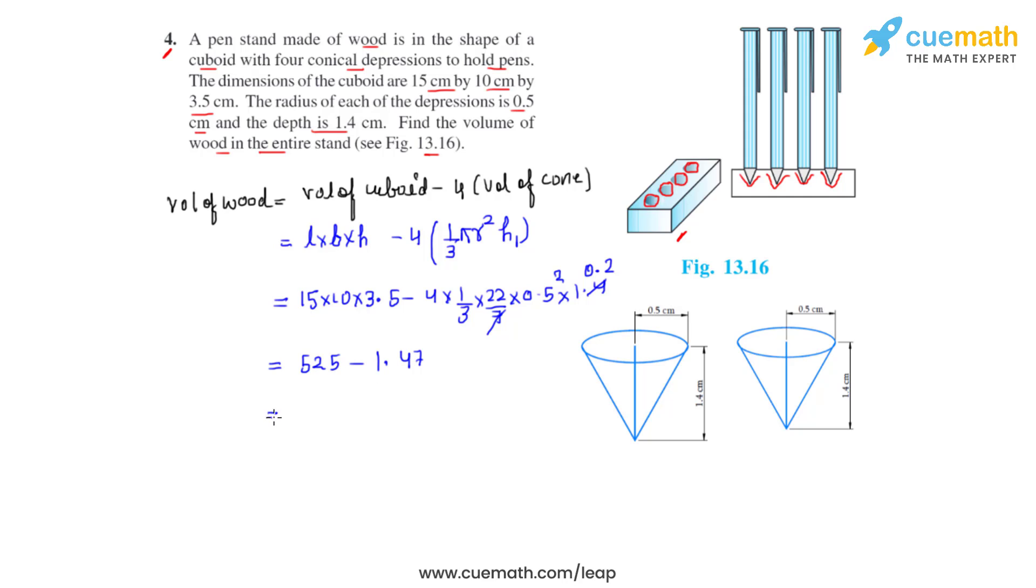Doing the subtraction gives us the difference as 523.53 centimeter cube, and this is the volume of the wood in the entire pen stand after scooping out or by subtracting the volume of 4 conical depressions from the volume of the cuboidal block that we initially had.